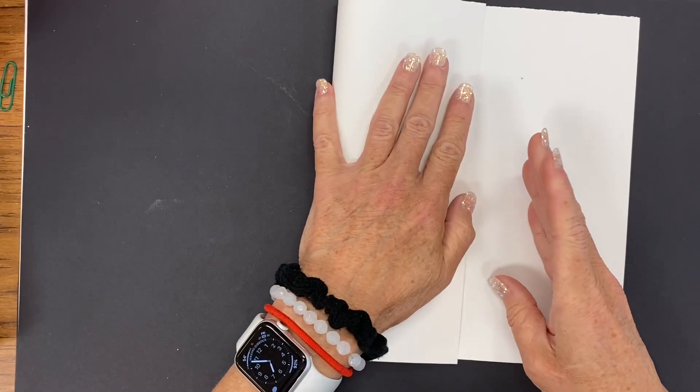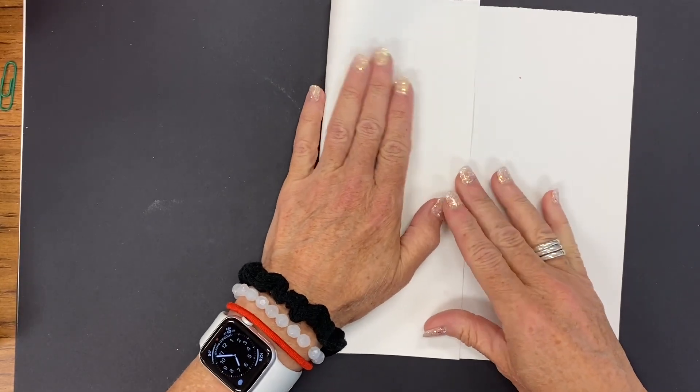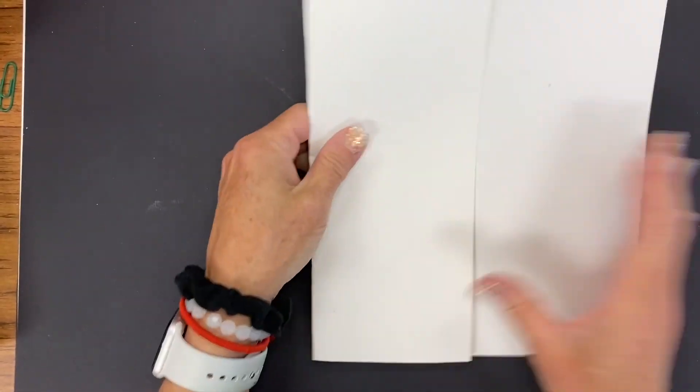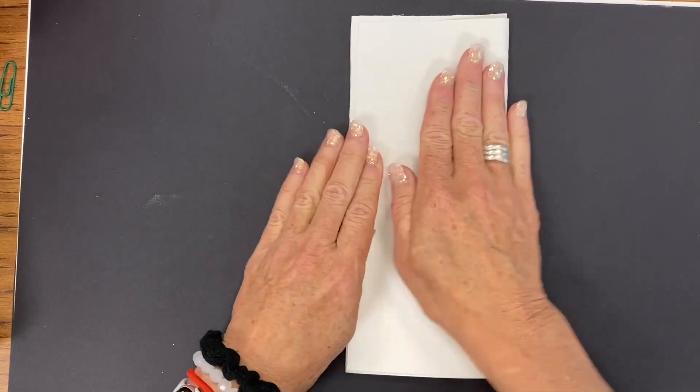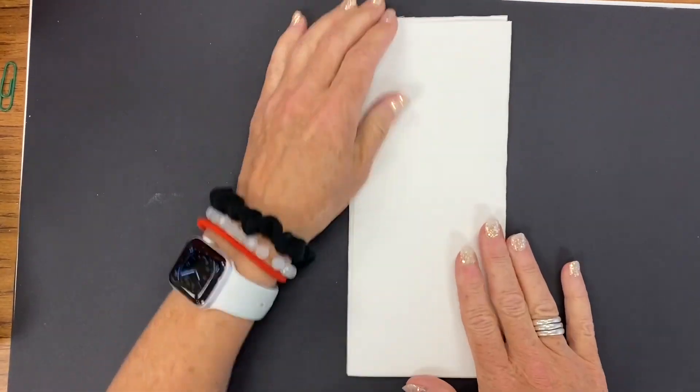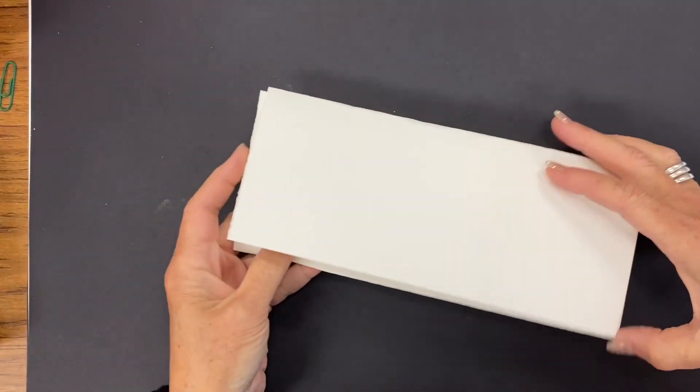The first thing you're going to want to do is fold your paper into thirds. This is just a 9 by 12 piece of art paper and there's one fold, there's the other. Go ahead and crease it. Open it up.